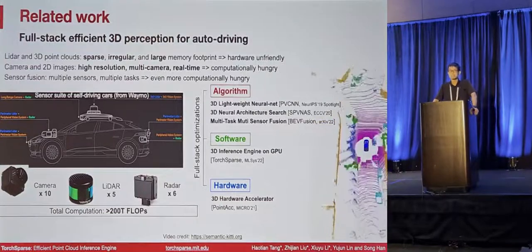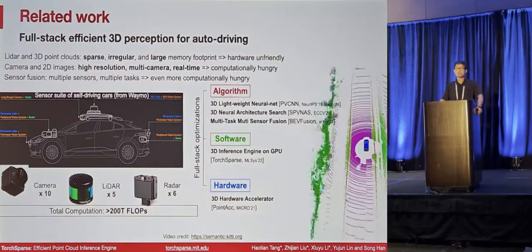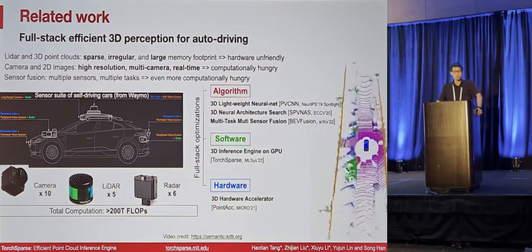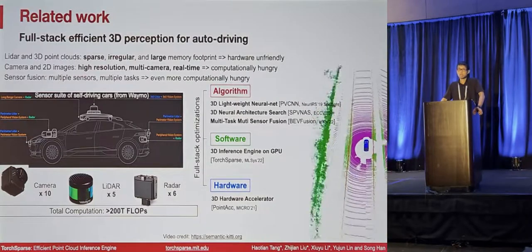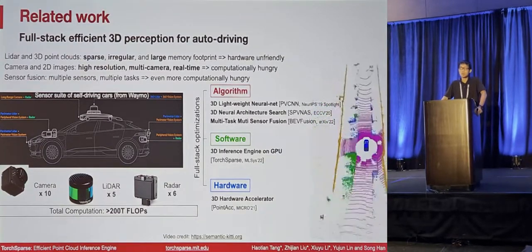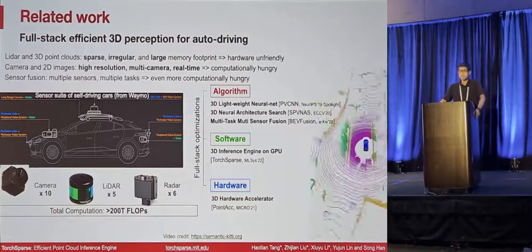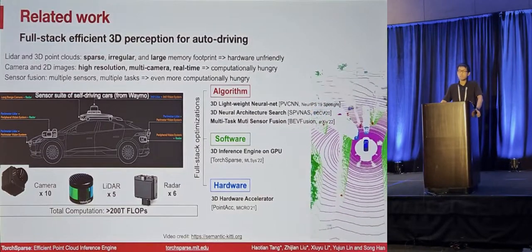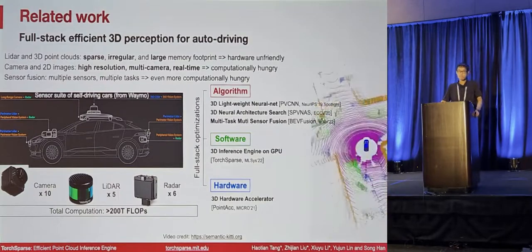We have extended the impact of TorchSparse from just an inference library to the full stack of efficient 3D perception for autonomous driving. We designed efficient algorithms including lightweight 3D neural networks such as PVCNN, accepted at NeurIPS as a spotlight presentation. We also proposed SPVNAS to automatically design efficient point cloud neural networks, accepted at ECCV 2020 and IEEE Transactions on Pattern Analysis and Machine Intelligence. Very recently, we designed BEVFusion, a multi-task multi-sensor fusion pipeline that fuses information from 3D LiDAR and camera sensors in bird's-eye-view space — currently the state-of-the-art on the Waymo Open Dataset for 3D object detection. We also have specialized hardware support called PointACC, accepted at MICRO 2021.